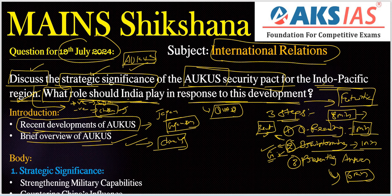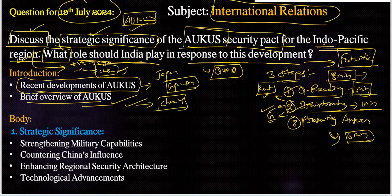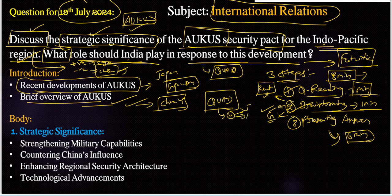Coming to the body part, we need to include some strategic significance — the positive side. Already we have the Quadrilateral Dialogue in the Indo-Pacific region. How many countries? Four countries: Japan, Australia, India, and the US — led by the US. We can use the mnemonic 'JAUS' for the quadrilateral dialogue.